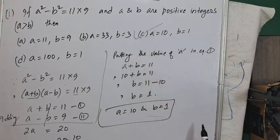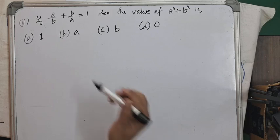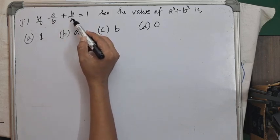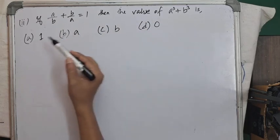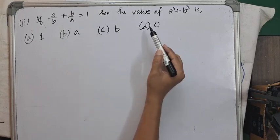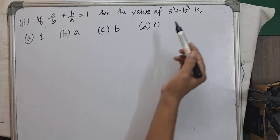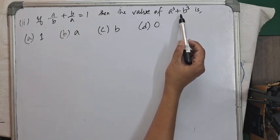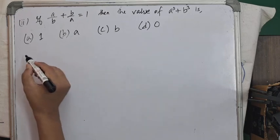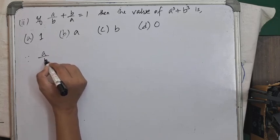Question number 2: if a/b + b/a = 1, then the value of a³ + b³ is — option A: 1, option B: a, option C: b, option D: 0. We are asked to find the value of a³ + b³ given this condition.